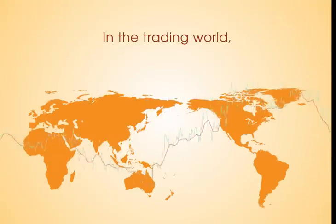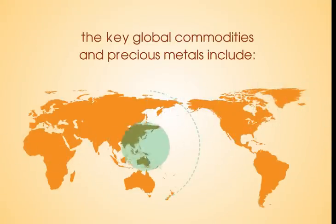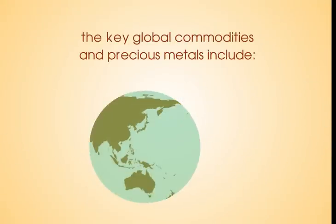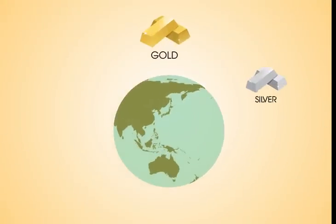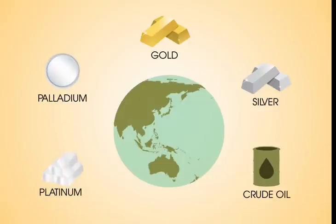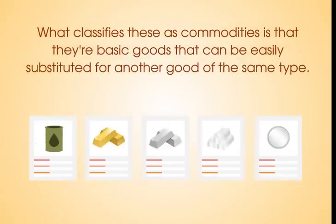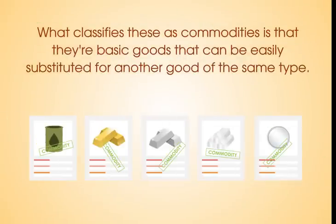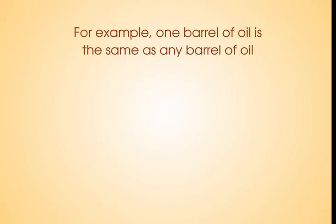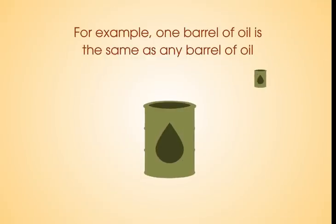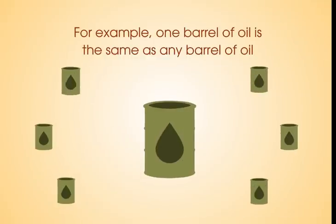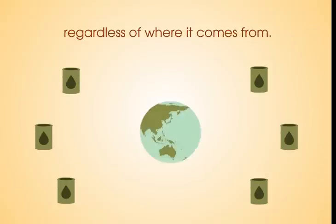What are commodities? In the trading world, the key global commodities and precious metals include Gold, Silver, Crude Oil, Platinum and Palladium. What classifies these as commodities is that they are basic goods that can be easily substituted for another good of the same type. For example, one barrel of oil is the same as any other barrel of oil, regardless of where it comes from.